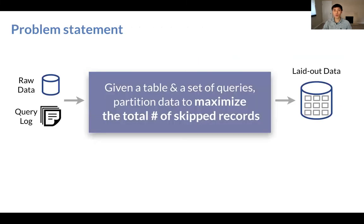In this work, we investigate the following problem. Given a table and a set of queries, how do we partition the dataset into blocks to maximize the total number of skipped records? Now because we are working in big data analytics settings, this IO metric often correlates strongly with query performance.